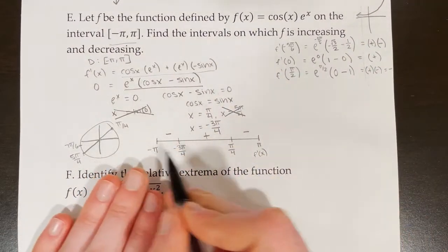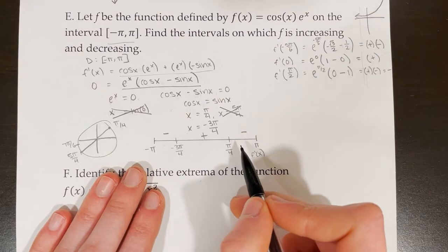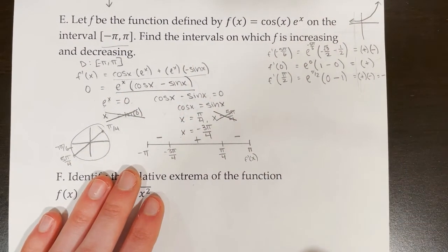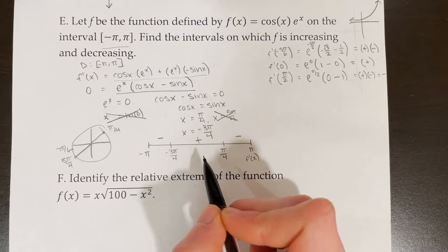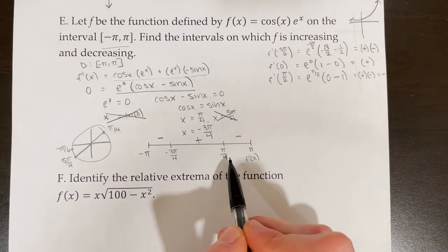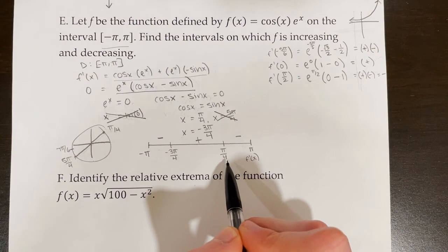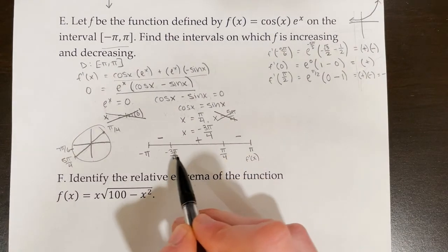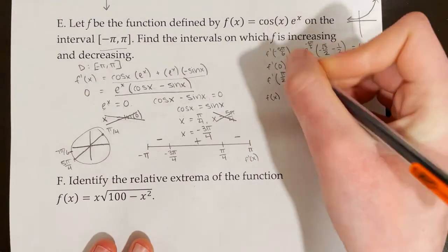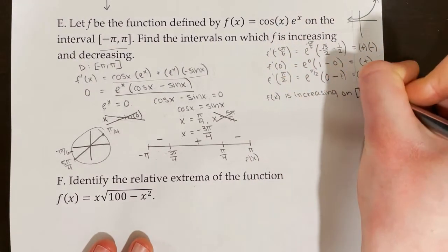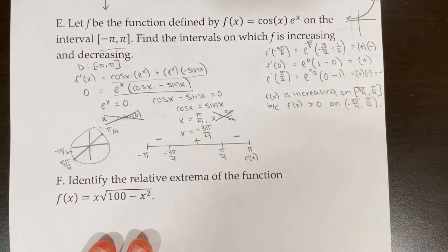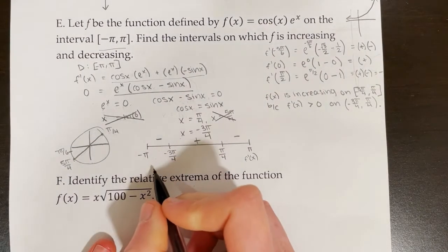f will be increasing on the closed interval from negative 3 pi over 4 to pi over 4, because f prime of x is greater than 0 on the open interval from negative 3 pi over 4 to pi over 4. For the decreasing intervals, a very similar justification applies for the intervals on either side.